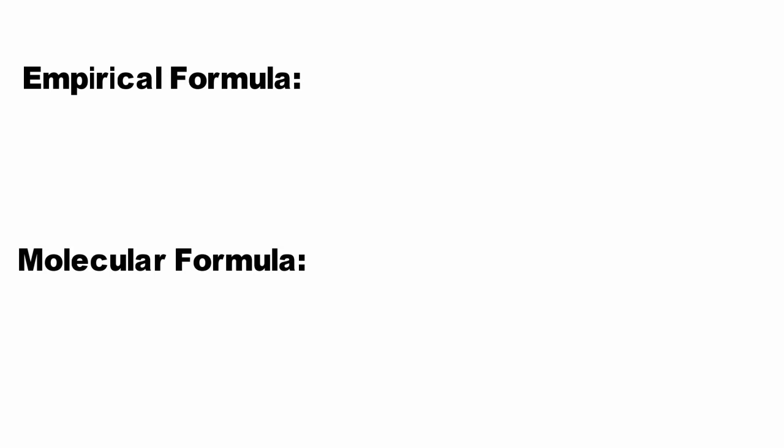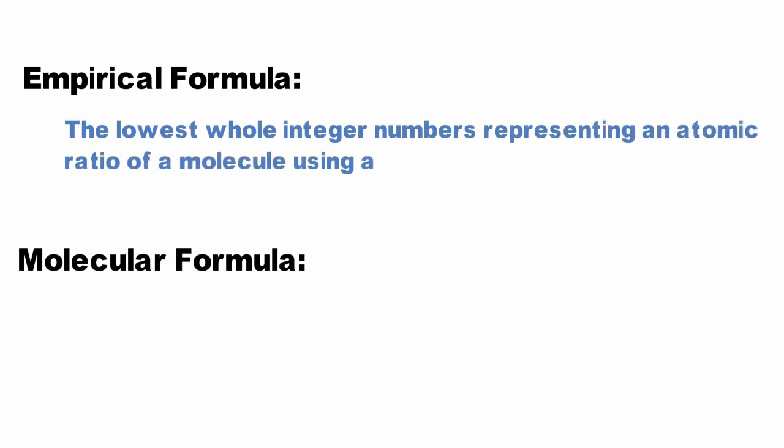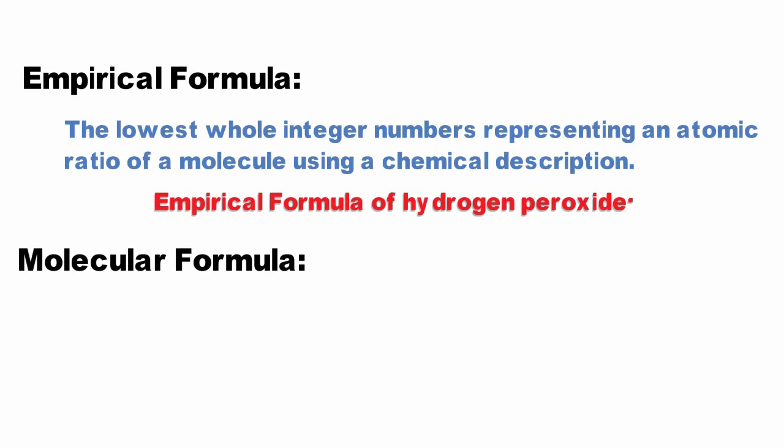We use an empirical or molecular formula to describe the relative number of atoms in each compound. An empirical formula is the lowest whole integer numbers representing an atomic ratio of a molecule using a chemical description. This means to calculate the empirical formula of a compound, find the smallest whole number molar ratio between the constituent atoms and write the ratio using the chemical symbols of the atoms. The empirical formula for hydrogen peroxide is HO.